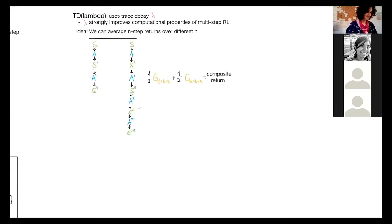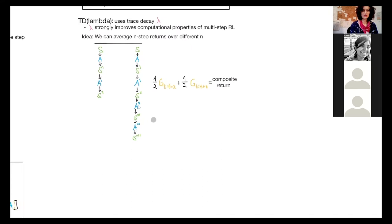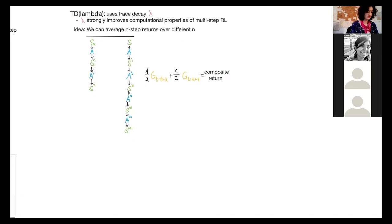So the idea is that we can average n-step returns over different ns. For example, take the two-step return and average it with the four-step return into a composite return of both.